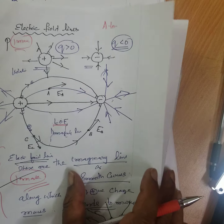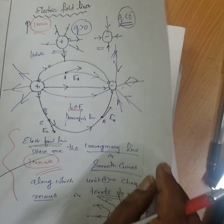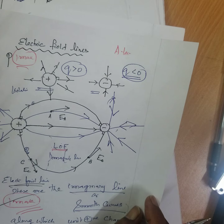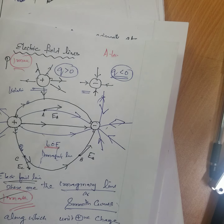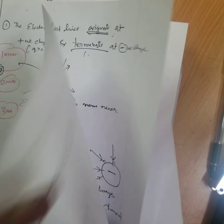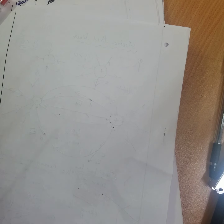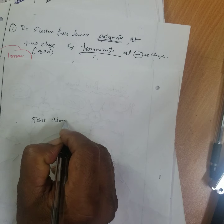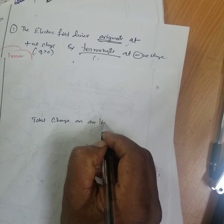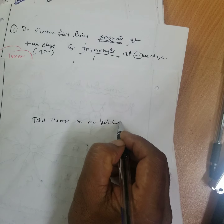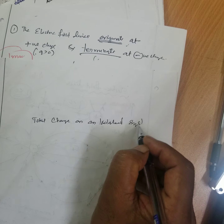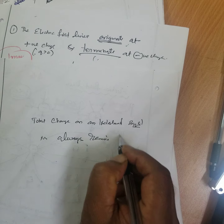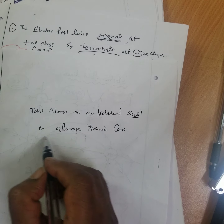A student asked: what do you mean by conservation of charges, or charges are conserved? The total charge on an isolated system always remains constant. This is known as conservation of charges.